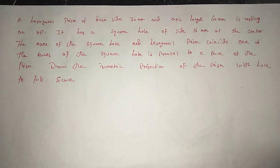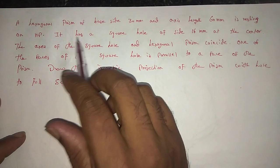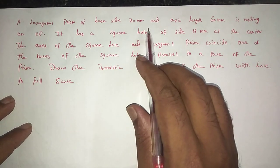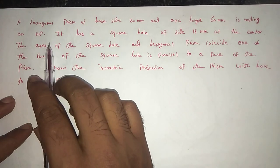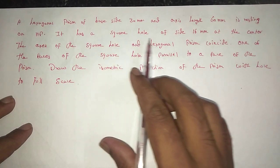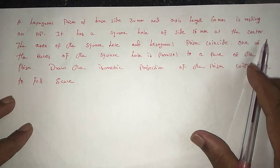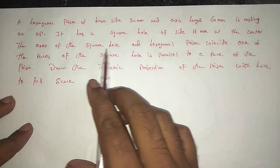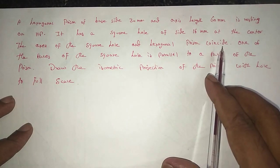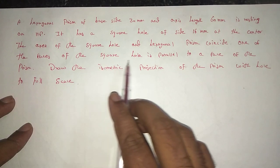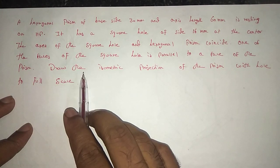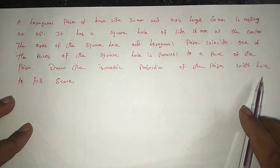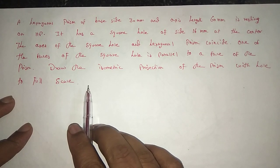In this video, we are going to see one problem from isometric projection. The problem is: a hexagonal prism of base height 30mm and axis height 60mm is resting on a hexagonal plane. It has a square hole of side 16mm at the center. The axis of the square hole and the hexagonal prism coincide. One of the faces of the square hole is parallel to the face of the prism. Draw the isometric projection of the prism with the hole to full scale.